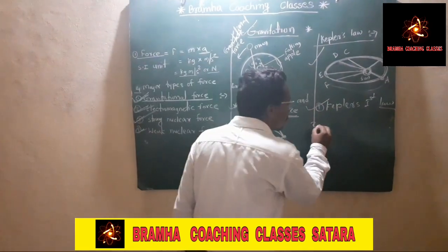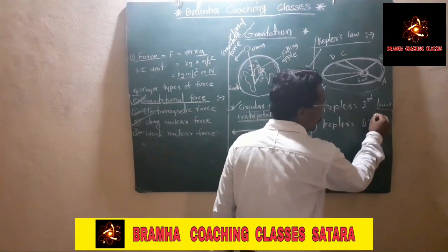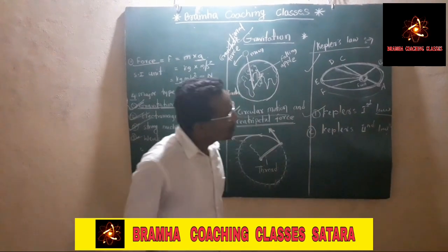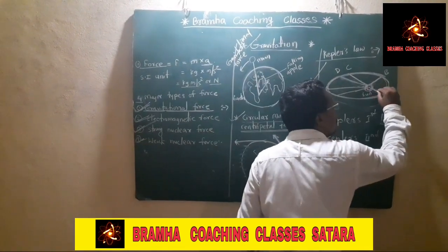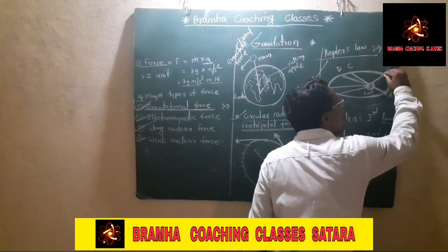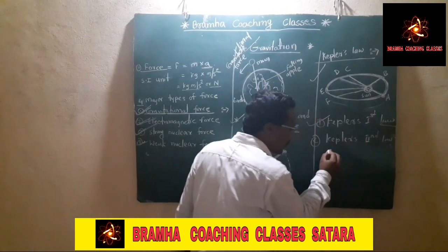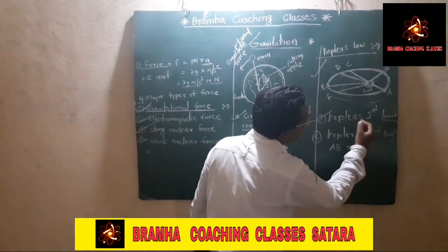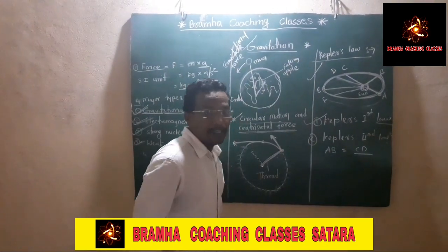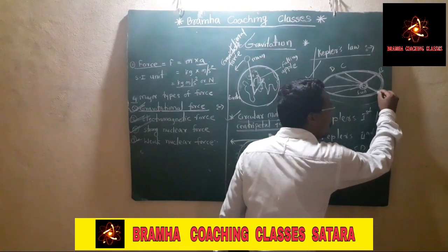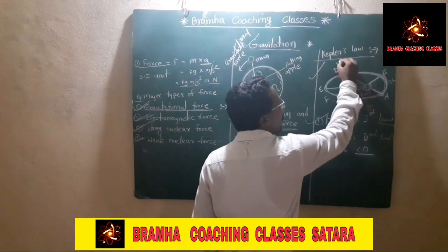Kepler's second law states that the line joining a planet and the sun sweeps equal areas in equal intervals of time. For example, the time required for a planet to cover distance AB is equal to the time required to cover distance CD. If the planet covers distance AB in some time — say phi hours — then CD also requires phi hours.